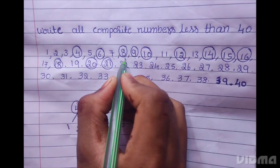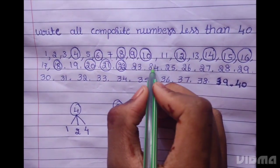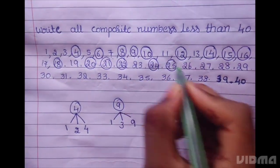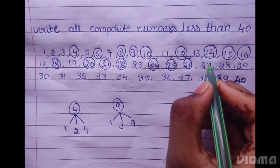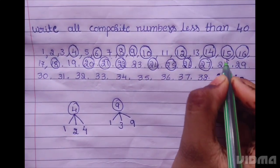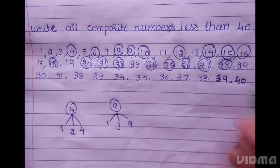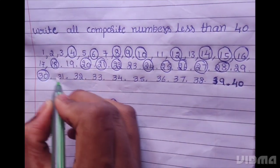21, 22 is composite number, 24, 25, 26, 27, 28 is composite number, 30 is composite number.